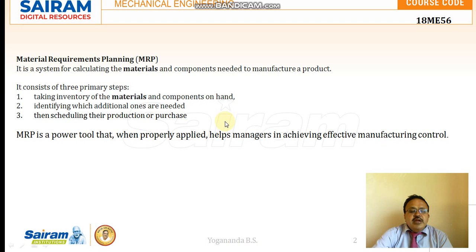MRP is a system for calculating how many raw materials, tools and other spare parts are needed to manufacture a product, when they are required and where they are required. This MRP planning will consist of 3 primary steps.